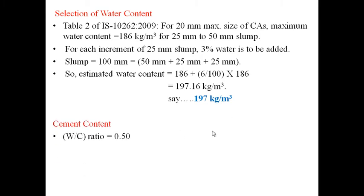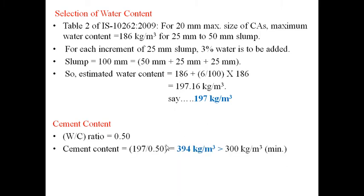Cement content: with water-cement ratio of 0.5, cement content = water content ÷ water-cement ratio = 197 ÷ 0.5 = 394 kg/m³, which is greater than the minimum of 300 kg/m³ prescribed by IS code, so it is acceptable.